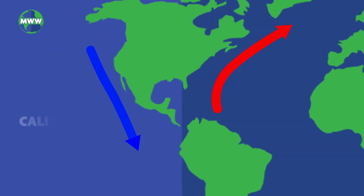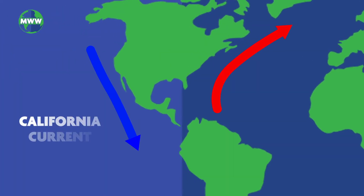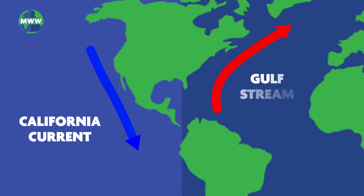In the United States, the cold current off the west coast is called the California Current. The current off the southeast coast, called the Gulf Stream, is one of the strongest currents known anywhere in the world, with water speeds up to three miles per hour.